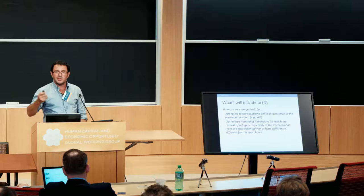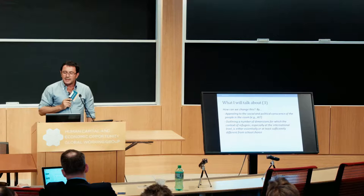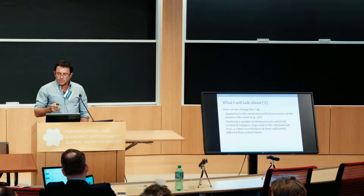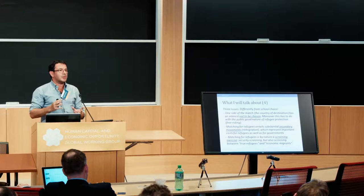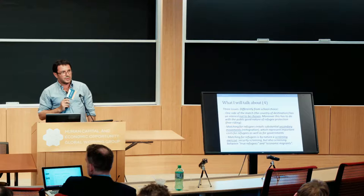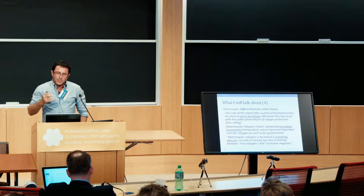One way which doesn't work is to say it's very important that you work on this important social issue — appealing to social and political conscience is maybe necessary but certainly not a sufficient condition. The other is to show why this could be different. Let me outline three directions for which I think there are essential or sufficiently different things from school choice. Once you start thinking deeply about a different context, you realize that it's different.